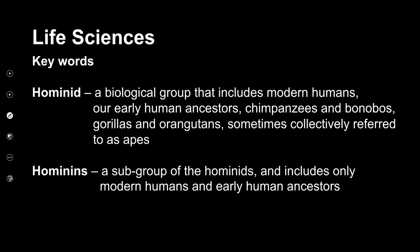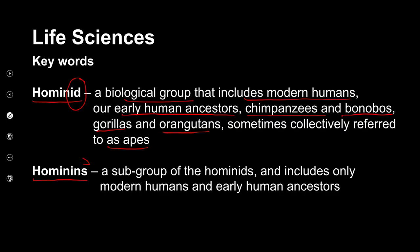Two very important terms when studying human and hominid evolution: the first is hominid — with a D at the end — which is a biological group that includes modern humans, early human ancestors, as well as chimpanzees, bonobos, gorillas, and orangutans, collectively known as apes. The second term is hominin — with an N at the end — and that is a subgroup of hominids. It only includes modern humans and early human ancestors, so we don't have the great apes included in this group.